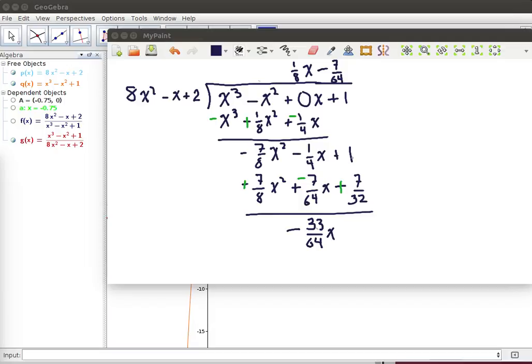And then we need to add the 1 and the 7/32. We need to get a common denominator there as well. 1 is the same as 32/32, so this is going to be +39/32.